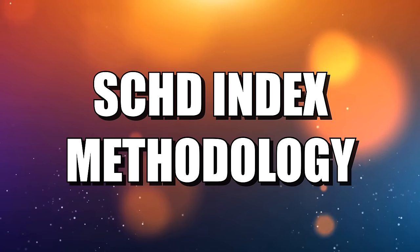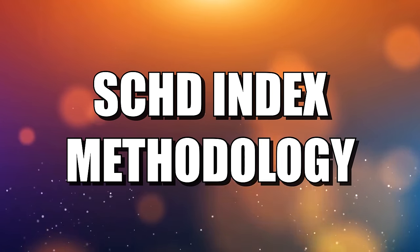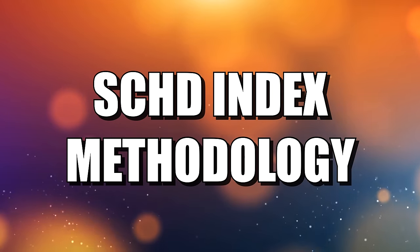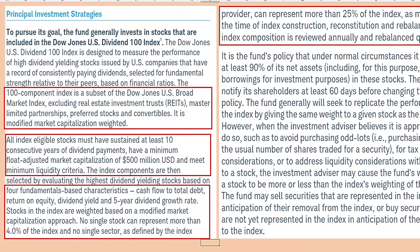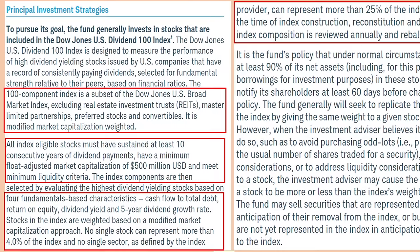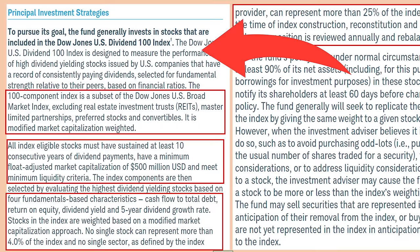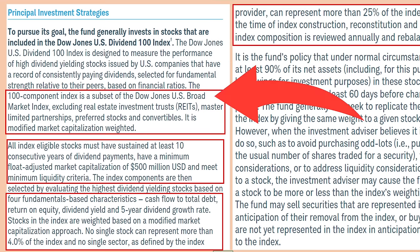Before we dive into that information, here's a brief look at the SCHD methodology from their website and regulatory documents. It invests in the Dow Jones U.S. Dividend 100 Index, and with this index they hope to measure the performance of high dividend yielding stocks issued by U.S. companies — not foreign companies — that have a record of consistently paying dividends selected for their fundamental strength. There are no REITs, master limited partnerships, preferred stocks, or convertibles in this index.